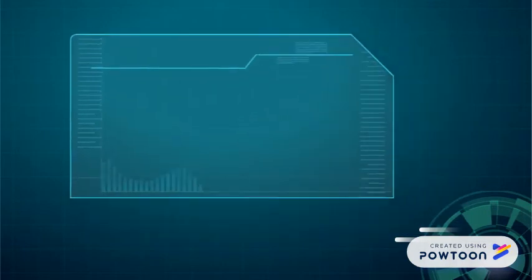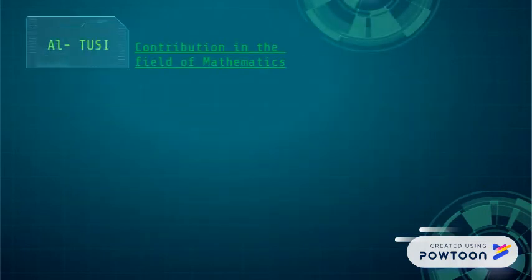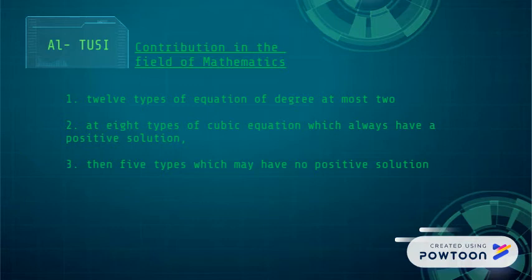What are the contributions of Al-Tusi in the field of mathematics? First, Al-Tusi discusses twelve types of equations of degree at most two. He then looked at eight types of cubic equations which always have a positive solution, then five types which may have no positive solution.